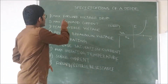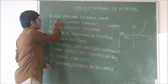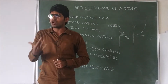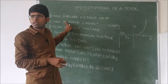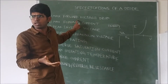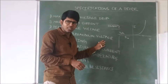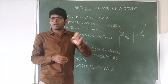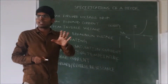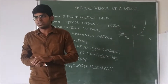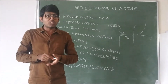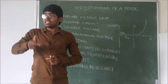The first specification is maximum forward voltage drop. What is this maximum forward voltage? The diode is connected in forward bias — this is an indication. When the diode is connected in forward bias, we are increasing the voltage.